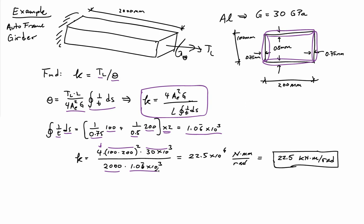Punching that into my calculator, I then find that torsional stiffness is 22.5 kilonewton meters per radian. And so the rotational rates in all these types of calculations come out in radians.